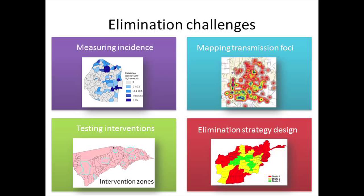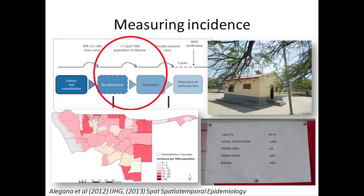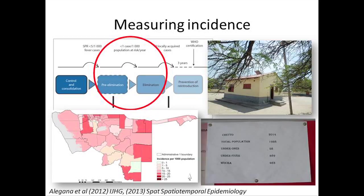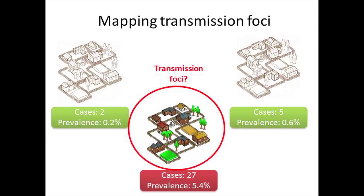I'm going to talk about some of the challenges these different countries are facing in terms of measuring incidence, mapping transmission foci, testing interventions, and elimination strategy design. First, measuring incidence: WHO recommendations at the elimination and pre-elimination stage say you should be mapping or measuring incidence — cases per thousand population per year — using individual health facility records with a denominator from the census.